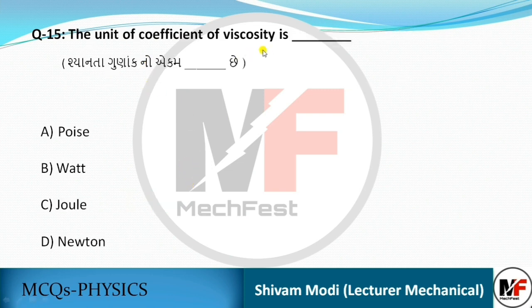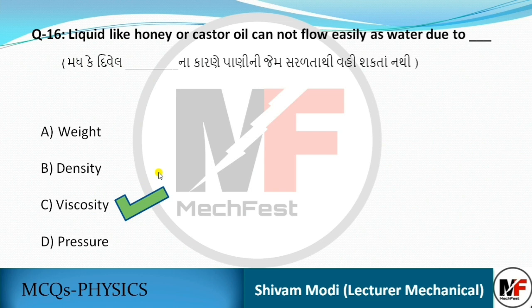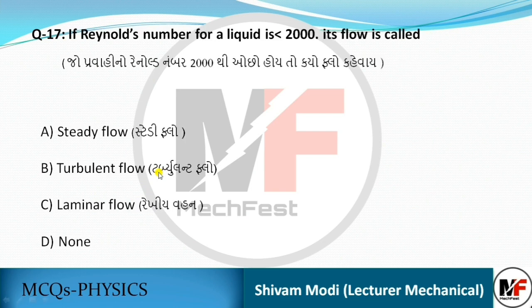The unit of coefficient of viscosity — we know that it is poise. Liquids like honey or castor oil cannot flow as easily as water due to their higher viscosity (sniktata). So the answer is: high viscosity prevents easy flow.